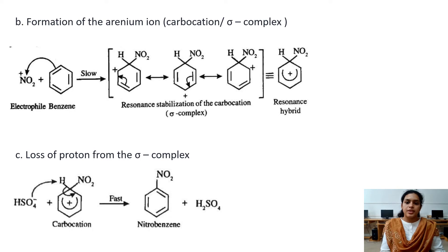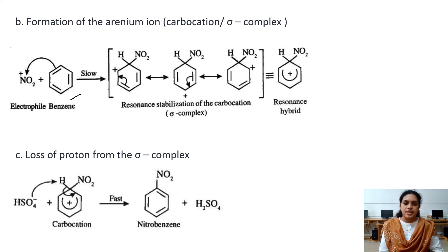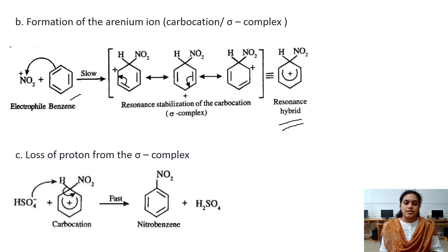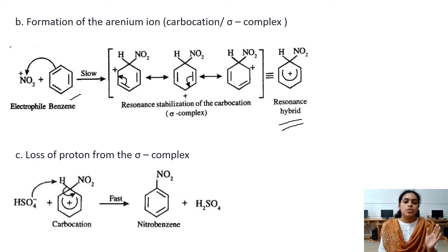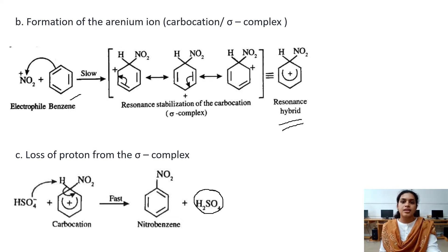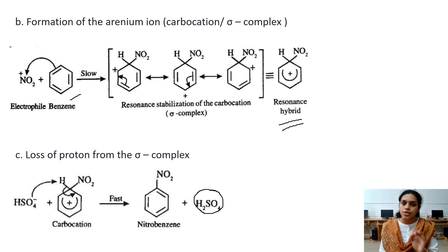In the second step, NO2+ attacks the benzene ring to give a resonance-stabilized sigma complex. In the third step, HSO4- abstracts one hydrogen, giving sulfuric acid and nitrobenzene as the main product. Sulfuric acid acts as a catalyst here — it is used initially but regained at the end of the reaction.